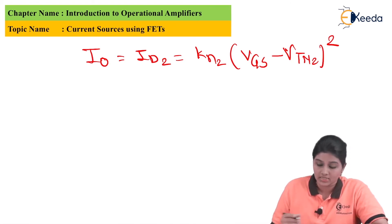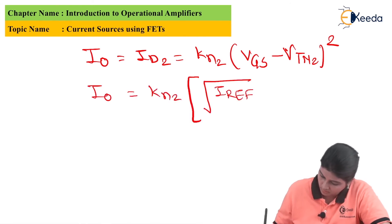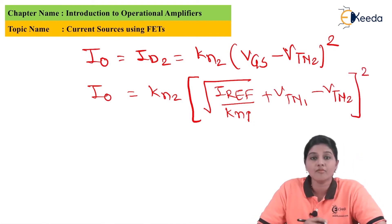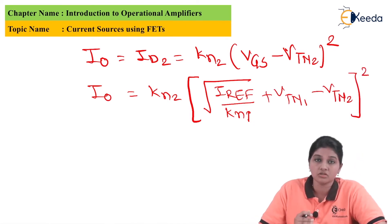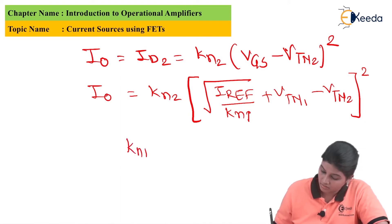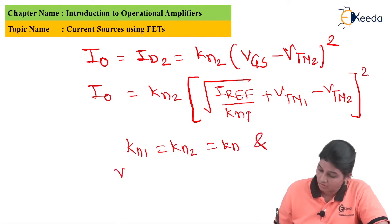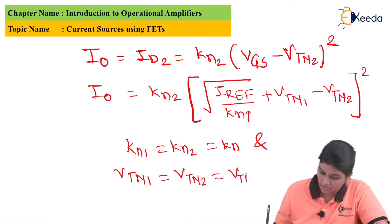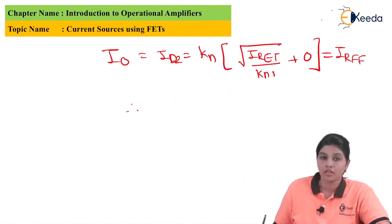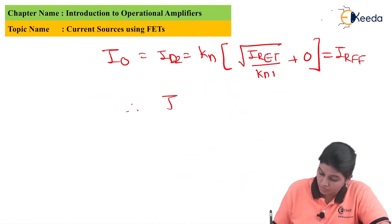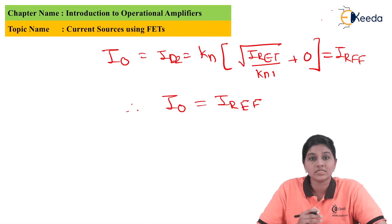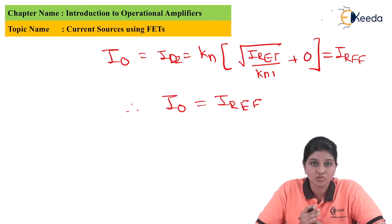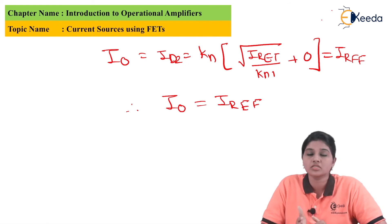If M1 and M2 are exactly equal, then KN1 = KN2 = KN and VTN1 = VTN2 = VTN. In that case, the output current equation simplifies and we can say that the output current equals I_reference. Since the gate currents IG1 = IG2 = 0, the output current equals the reference current.